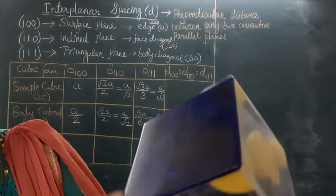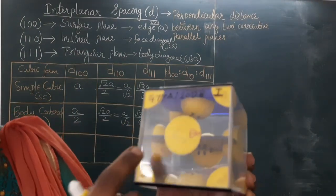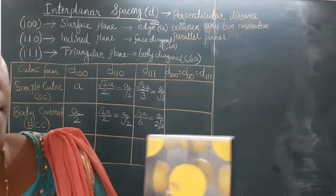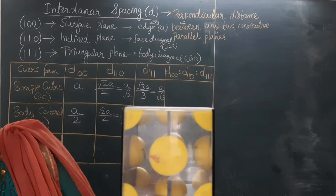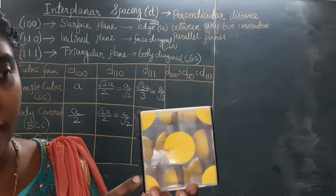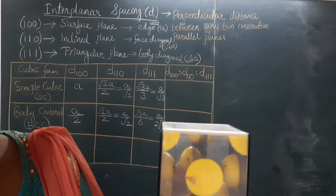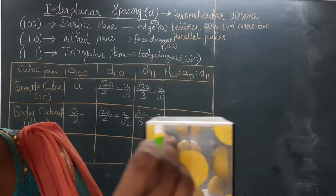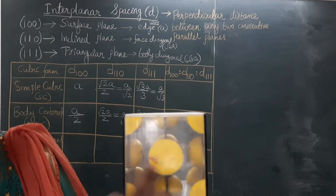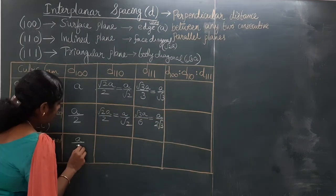Now we can come to the FCC. See this crystal structure — the atoms are at the corners and also at the face of each side. For the 100 family, there is one surface plane, next surface plane at the middle, and a third surface plane at the far side. The distance between two consecutive 100 planes in FCC is A divided by 2, since there are three planes giving two perpendicular distances. So D(100) for FCC = A/2.